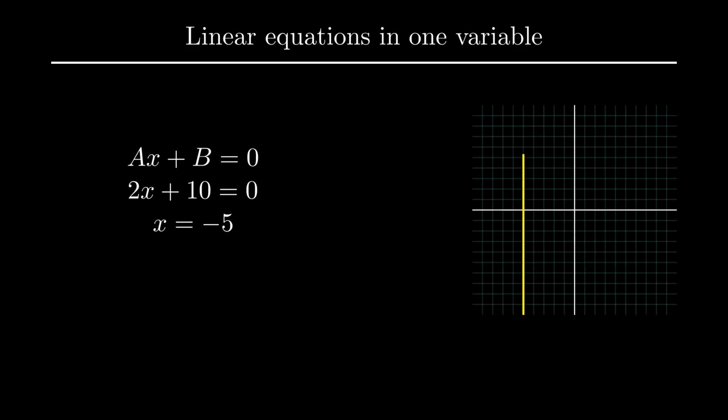Graphically the solution is represented by a line parallel to the y-axis such that each abscissa or x coordinate always remains equal to minus 5. Solving a linear equation in one variable is quite easy as it involves the elimination of terms except the given variable.